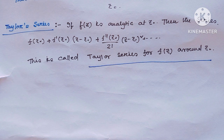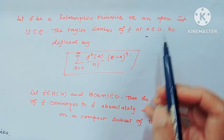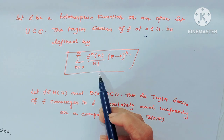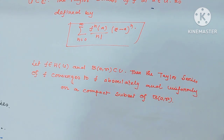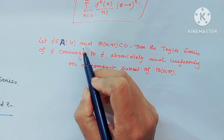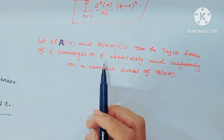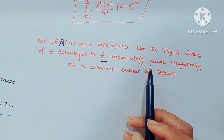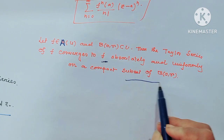This means: if f(z) is analytic at point z₀, then there exists a Taylor series f(z₀) + f'(z₀)(z - z₀) + f''(z₀)/2! · (z - z₀)² + ... and this is called the Taylor series for f(z) around z₀. If f is holomorphic on an open set U containing c, the Taylor series at point a is Σₙ₌₀^∞ f⁽ⁿ⁾(a)/n! · (z - a)ⁿ, and this converges absolutely and uniformly on compact subsets.